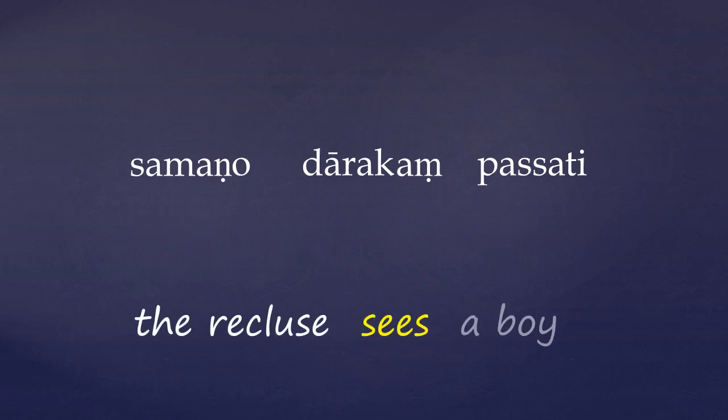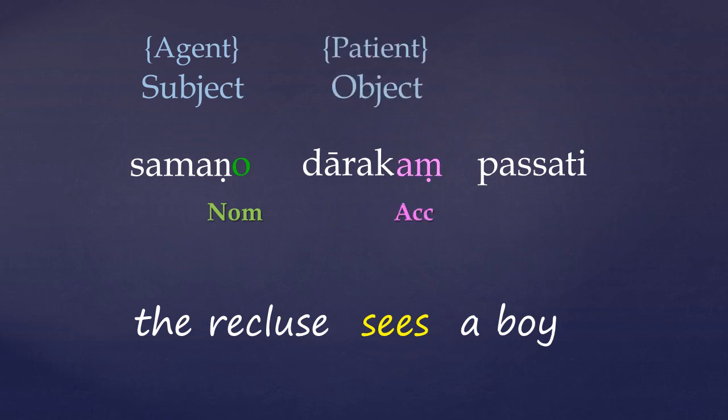Well next, Warder devotes, I think, three sentences to explain that personal pronouns aren't always expressed. So let's unwrap this a little bit more. Taking the example, the recluse sees a boy. Now the recluse is in nominative case, which marks it as a subject of the verb. And the boy is in accusative. It's the object being seen. And the verb is made to agree, in both person and number, with its subject. Here, the recluse. Notice that in Pali, most words are marked by inflections.